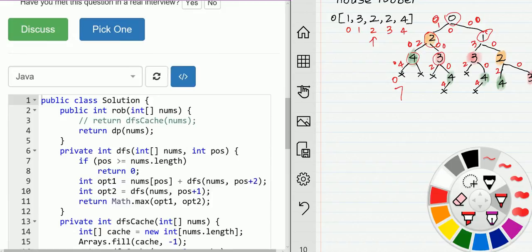...we start from option one: we rob that house, we get money at that index, then we move forward two steps. Option two: we will not rob, so we just move one step forward. Then we return the maximum value of option 1 and option 2. Again, if we look at the recursion tree here...